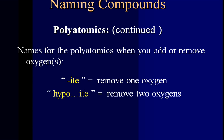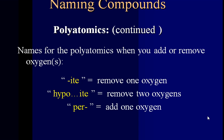If two oxygens are removed from the 7 polys that you're supposed to know, then we have not only an -ITE ending, but we also have the prefix hypo — so we have hypo-ite, essentially. If an oxygen has been added to the 7 polys, then we still have an -ATE ending, but we have the prefix per.